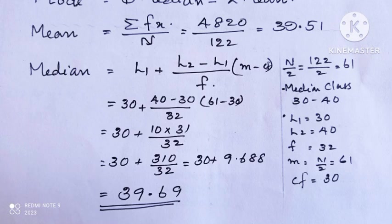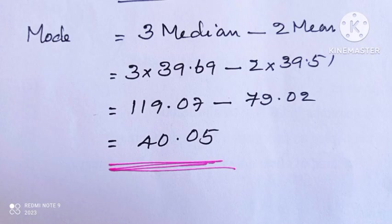Mean is equal to 39.51, median is equal to 39.69, then mode is equal to 3 times median minus 2 mean. The final answer is 40.05.